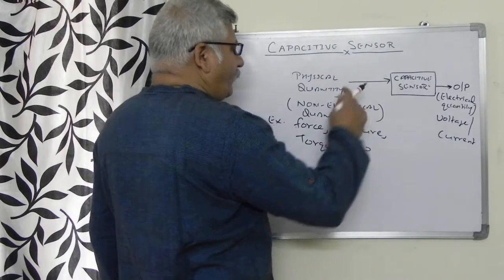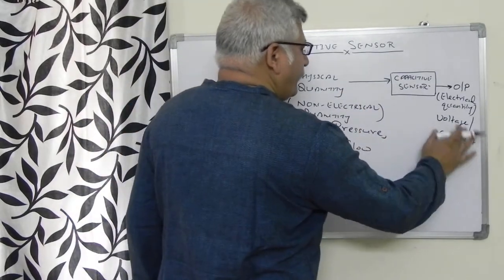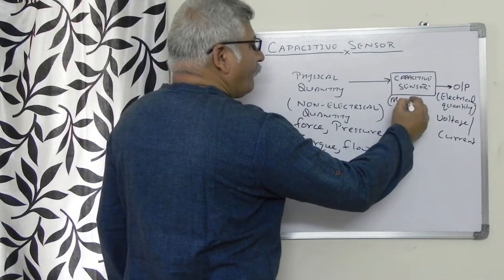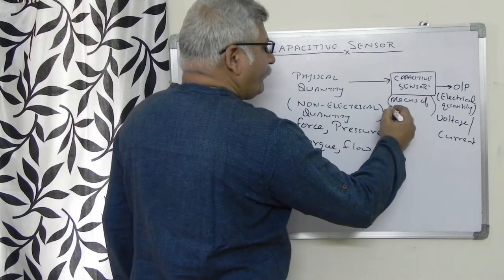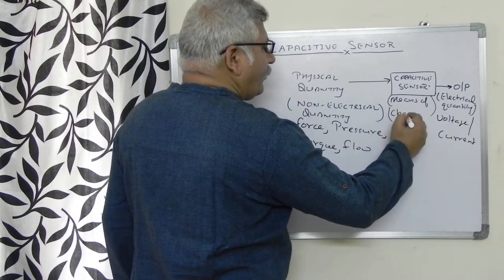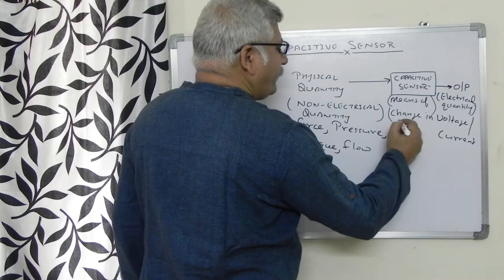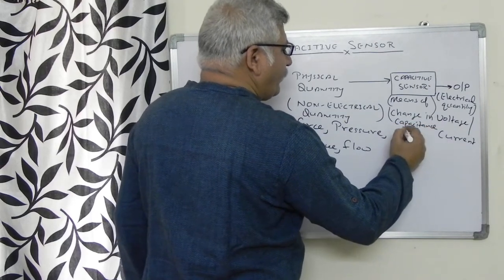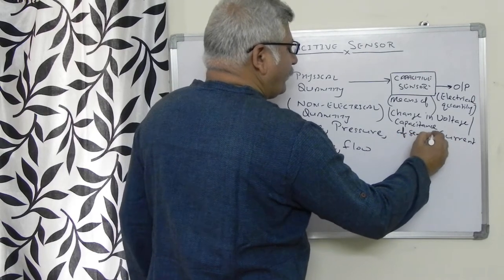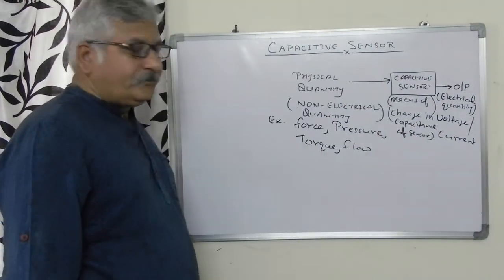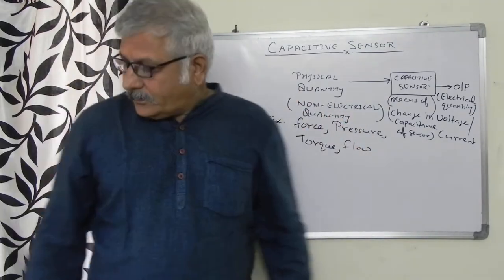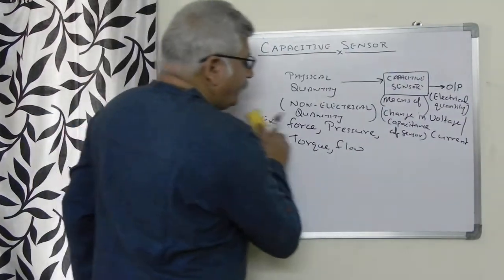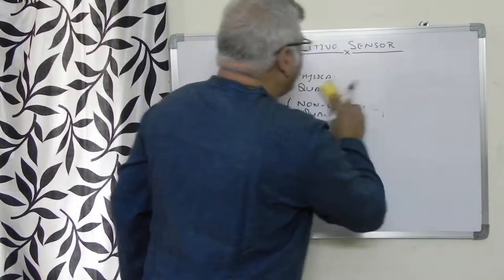To convert a physical quantity into an electrical quantity, this is done by means of a change in capacitance of the sensor.